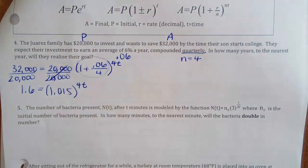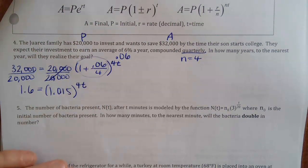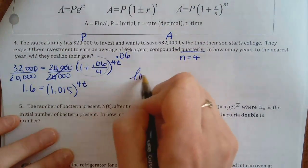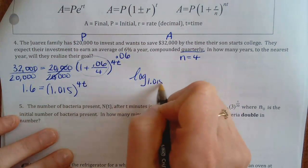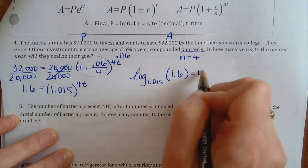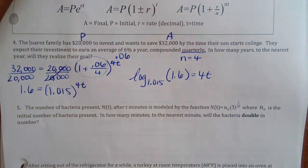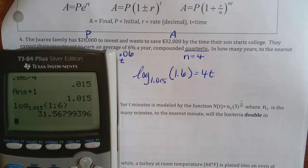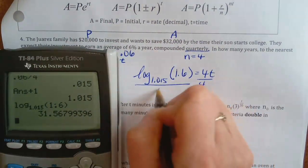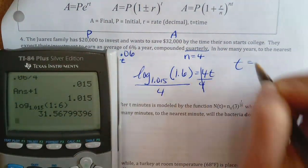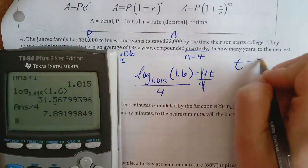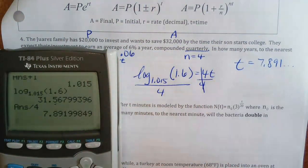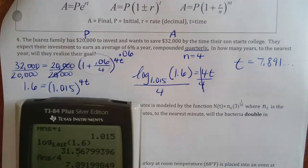We're as isolated as we can get, so turn it into a log: log base, answer, power. Log base 1.1015 of 1.6 — divide that answer by 4 and get 7.891. To the nearest year, that's about 8 years they need to invest to reach their goal.